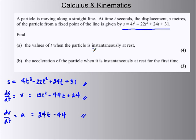Instantaneously at rest. Now something instantaneously at rest has velocity zero. So for part A, I need velocity equal to zero. In other words, I need that to be zero.